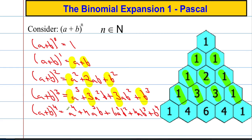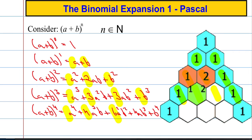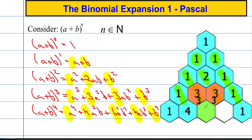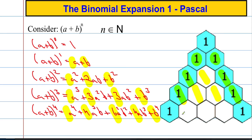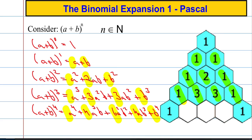And then finally down here we have one, four, six, four, one. And let's see — one, four, six, four, and one. So Pascal's triangle is really useful for helping us work out what numbers are going to go in front of each term.